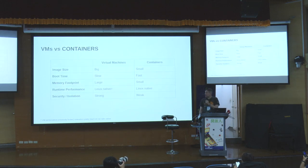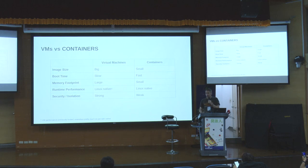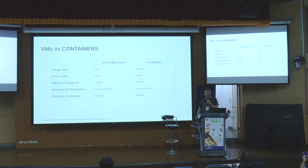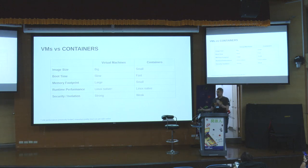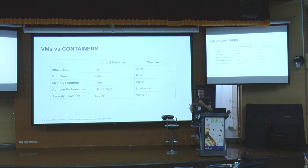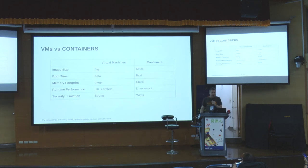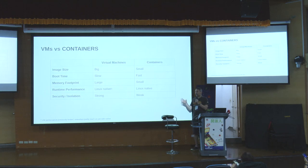Comparing these two using a few metrics: the image size of virtual machines is big — they take time to deploy — while containers are pretty small. The boot time of VMs is relatively slow compared to containers that start much faster. The footprint of the OS is pretty big compared to a container. Runtime performance used to be much slower on VMs, but nowadays with hardware virtualization extensions, VMs are as fast as the native case. When it comes to security and isolation, however, the isolation provided by the hypervisor was strong, while containers have a pretty weak security model.